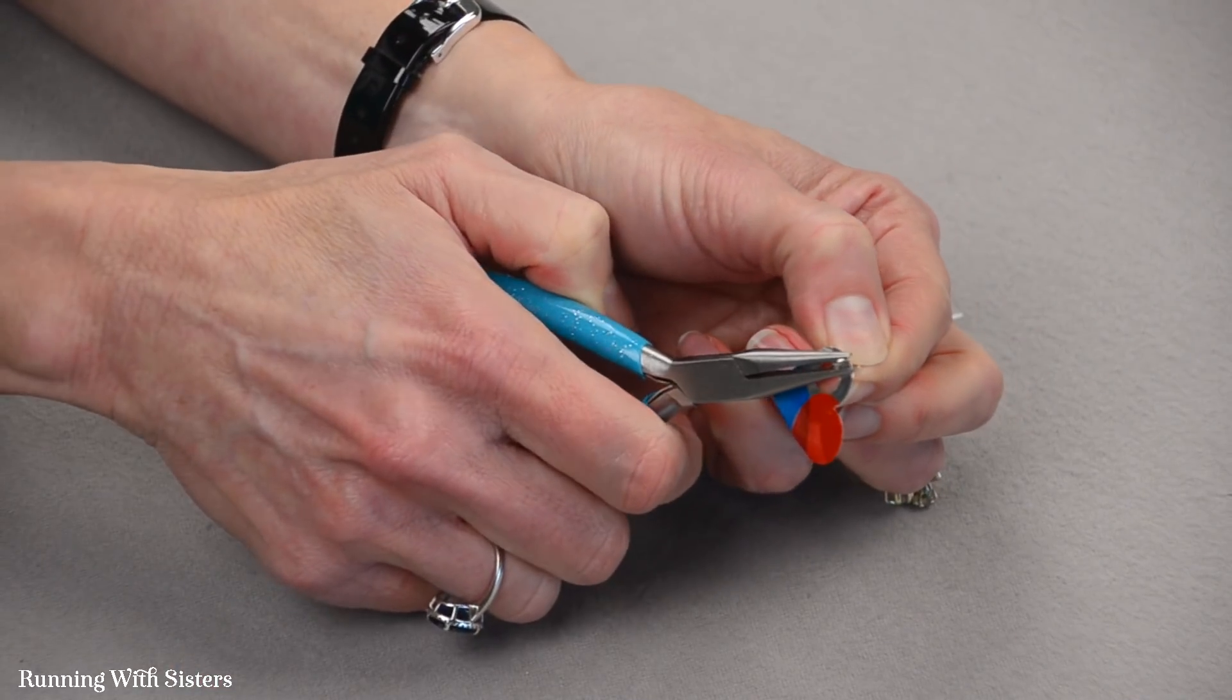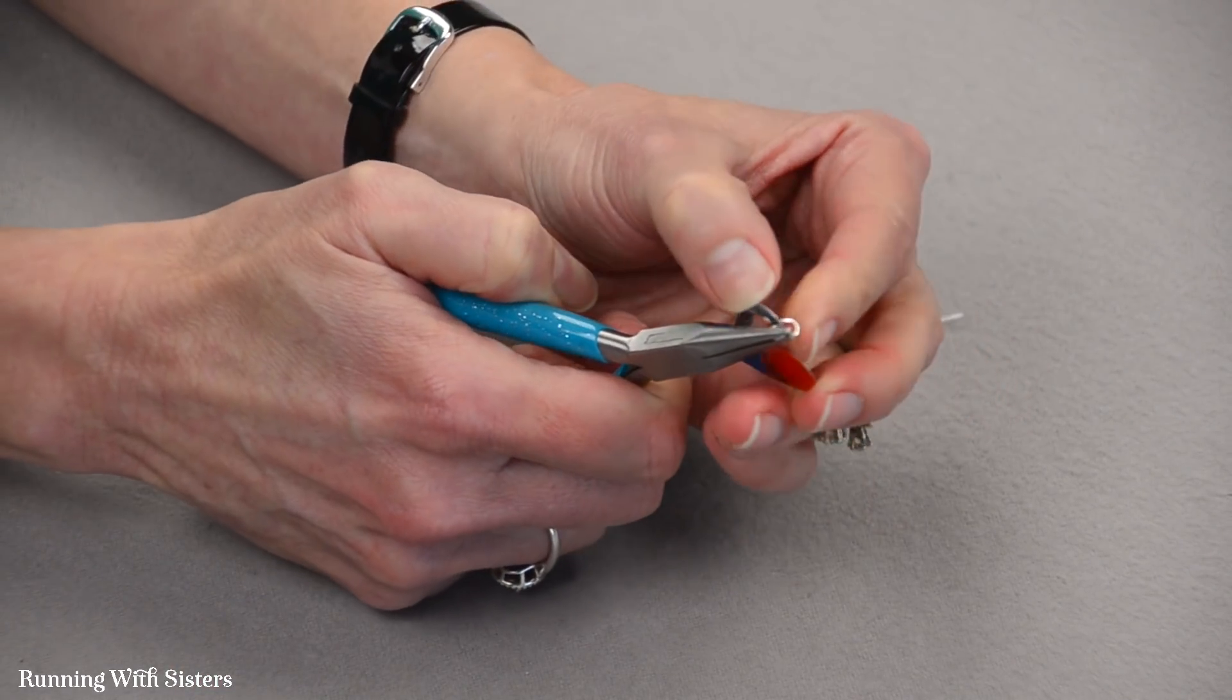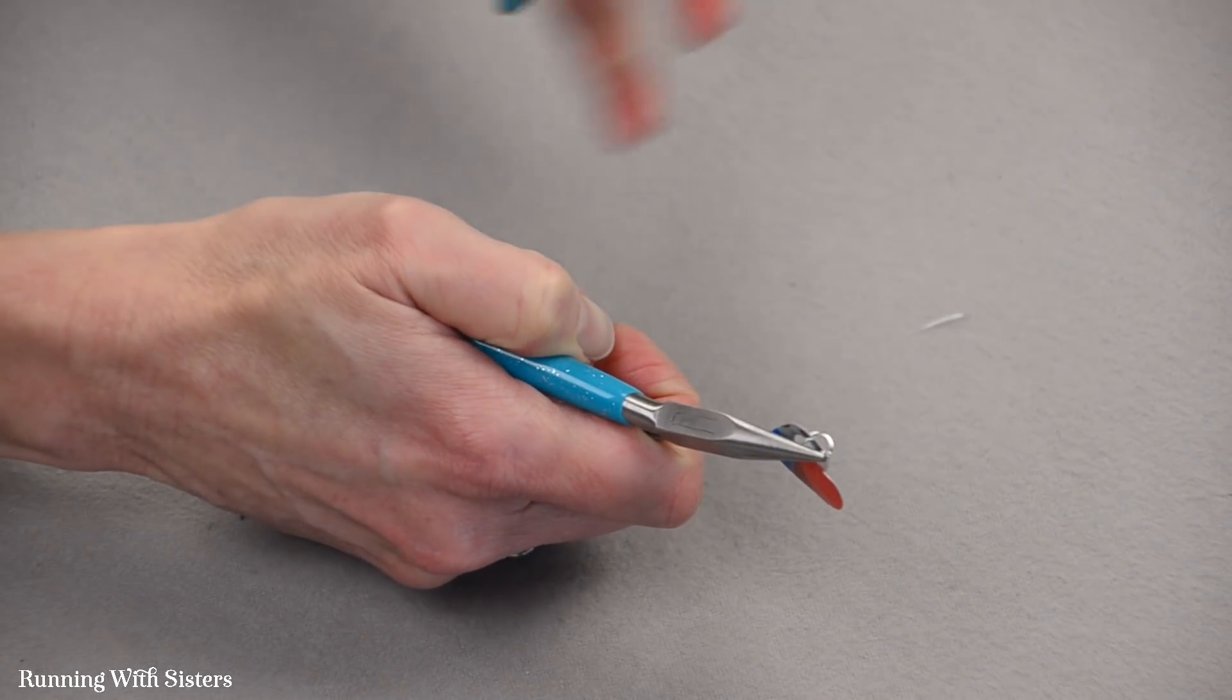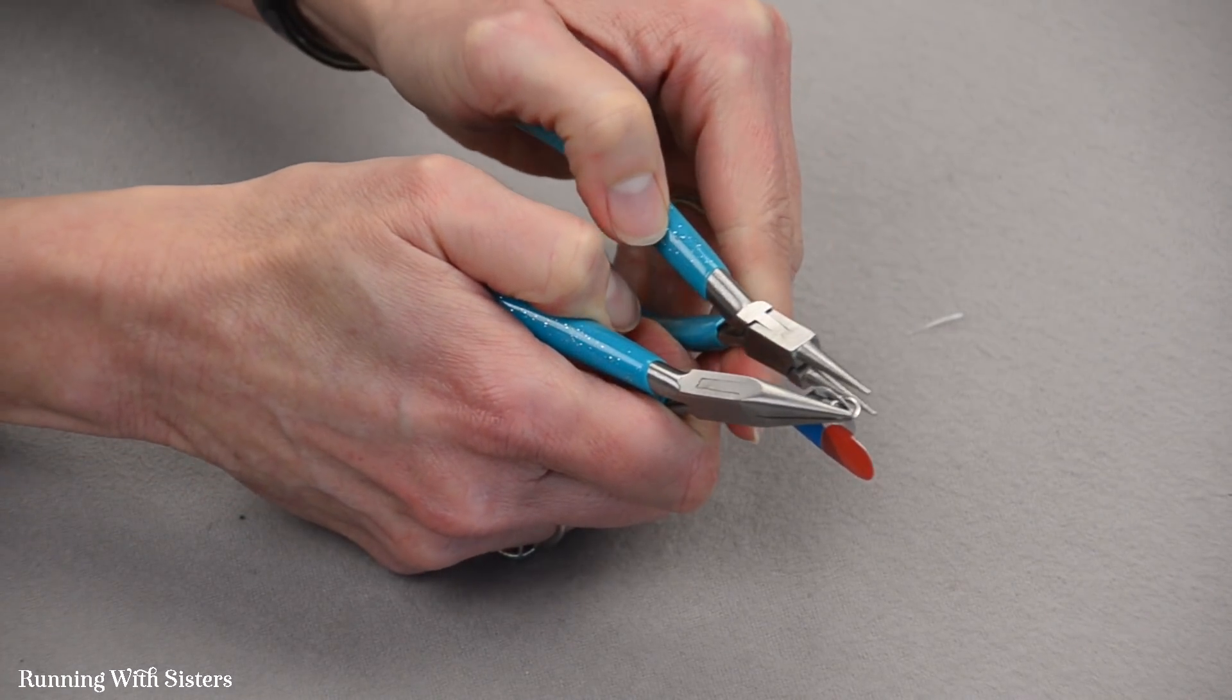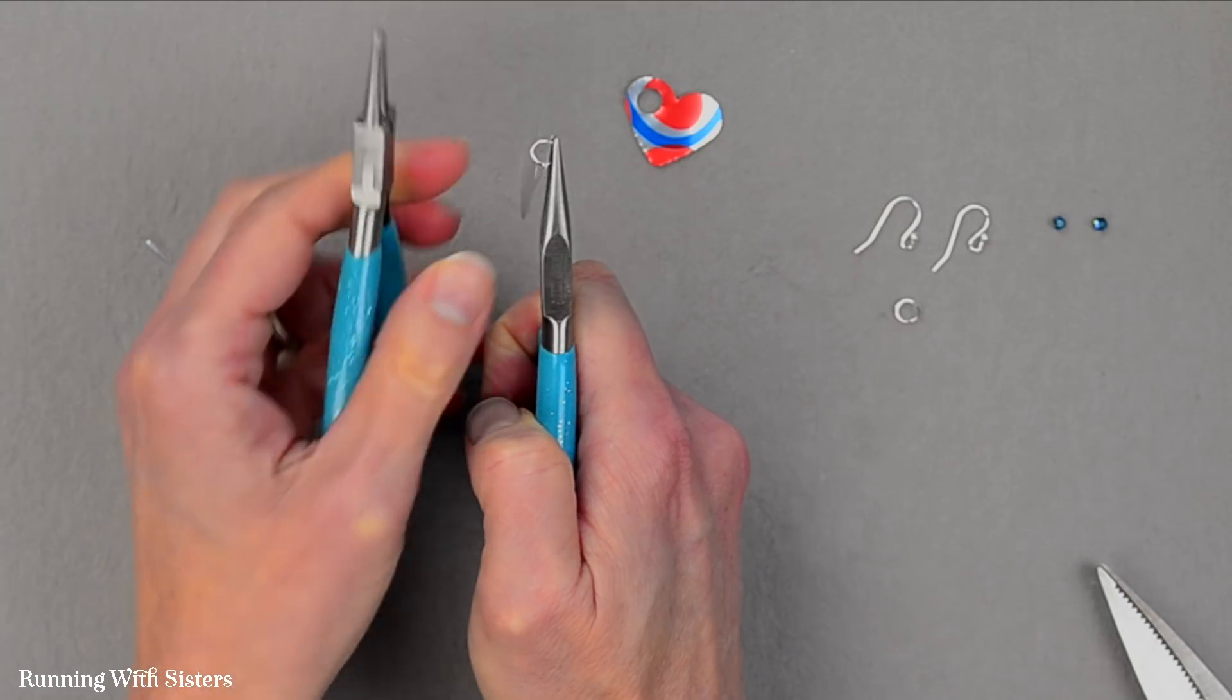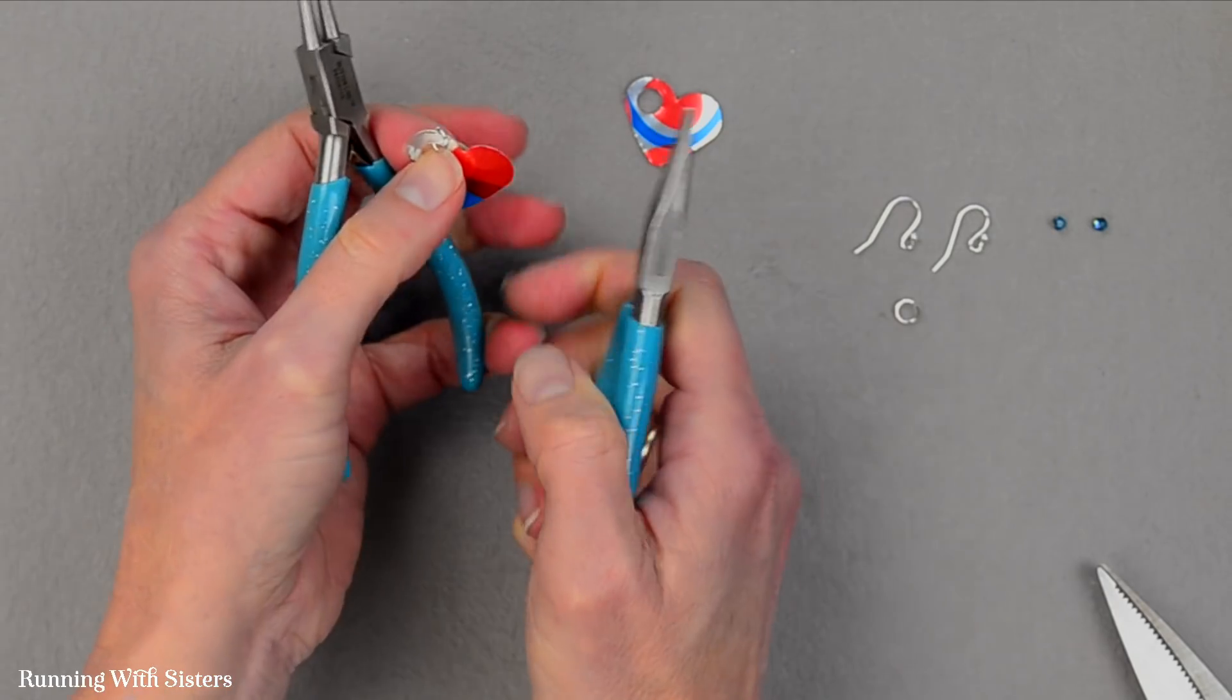And then I'm going to close the jump ring. And to close the jump ring I'm going to hold the jump ring on one side of that opening with my chain nose pliers. I'm going to grab a second pair of pliers and I'm going to rotate this jump ring closed just like that. And that'll keep that nice round shape of my jump ring.